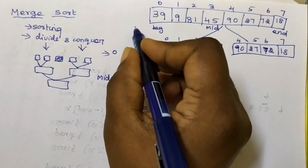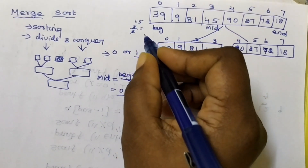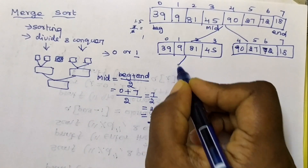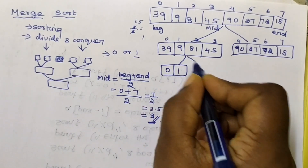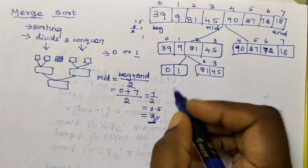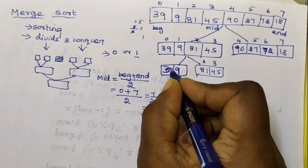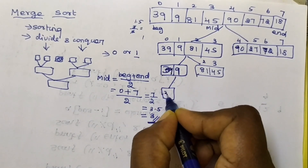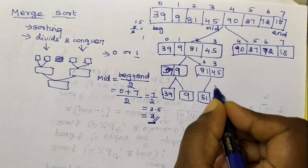For the sub-array, 0 plus 3 divided by 2 is 1.5, so the mid position is 1. The divide phase covers index 0 to 1. We continue dividing using this mid calculation until all sub-arrays are single elements.